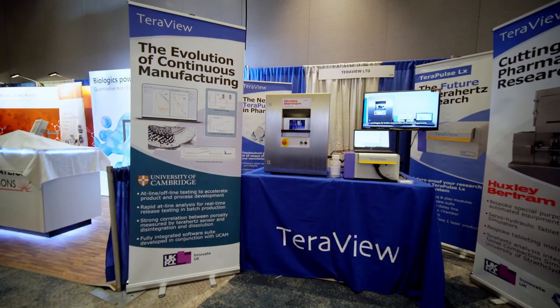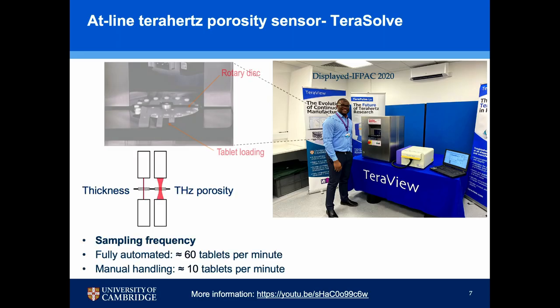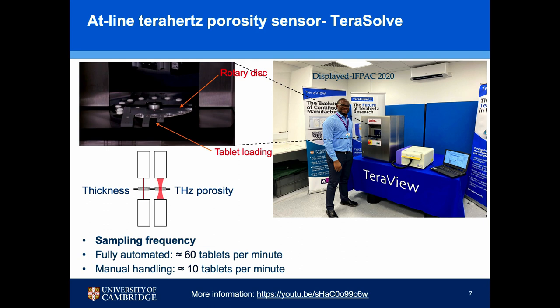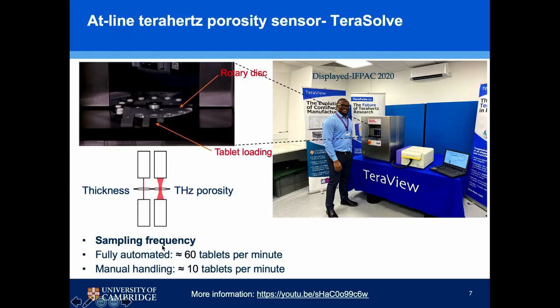This is the inline sensor, which was displayed during last year's IFPAC meeting. The inline sensor is basically composed of a rotary disc. We load the tablet onto the disc, which rotates and positions the tablet in front of a laser gauge that accurately measures the thickness. From there, it positions the tablet in front of the Terahertz pulse and the porosity is measured. When fully automated, we are expecting about 60 tablets per minute to be measured. Currently, we are doing manual feeding, so we are able to measure about 10 tablets per minute.